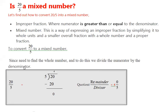Okay, now we have a question: is 20 upon 5 a mixed number or not? Now see, we know that whenever the numerator is greater than the denominator, it is called an improper fraction.